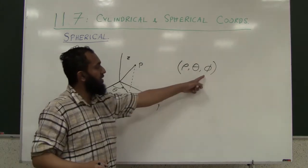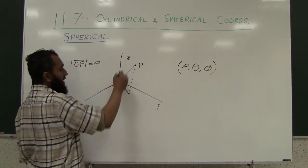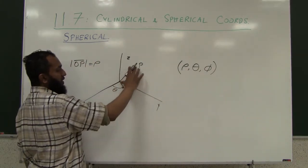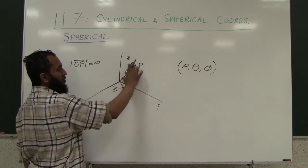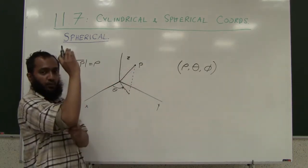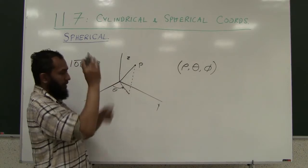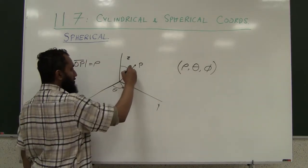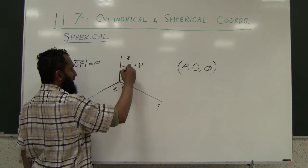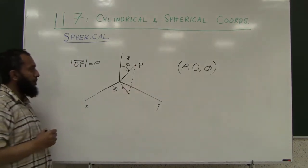The final angle, phi, is the angle of the line segment from the origin to the point — specifically, how much you have to open from the positive z-axis to reach that point. So, how much you open from the positive z-axis is your phi.